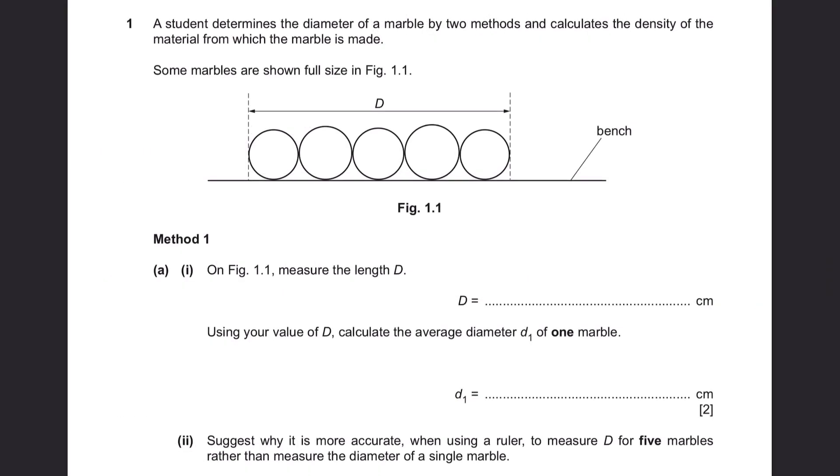Question 1. A student determines the diameter of a marble by two methods and calculates the density of the material from which the marble is made. Some marbles are shown full size in figure 1.1. These marbles are usually placed in between two blocks and the length between these two blocks are measured.